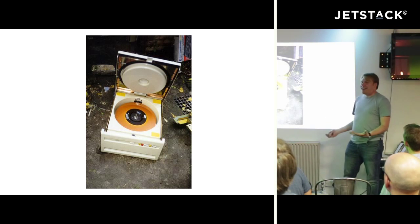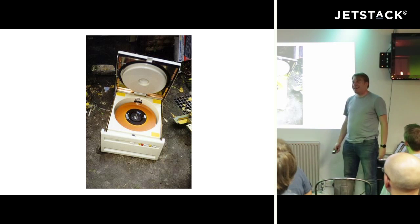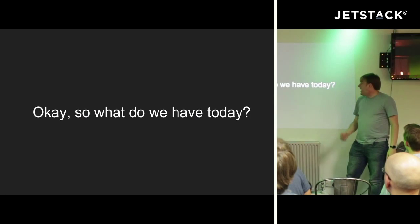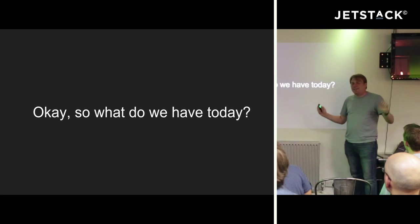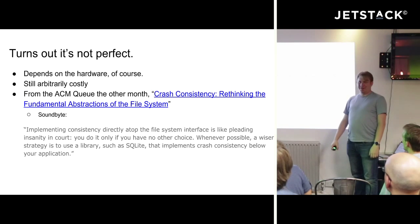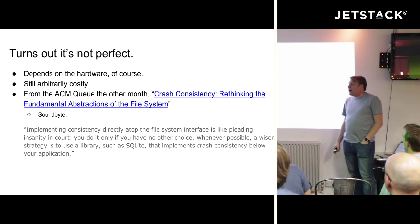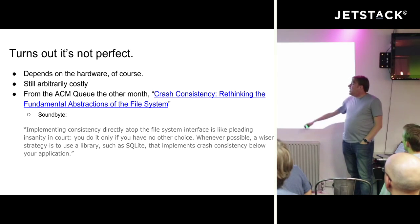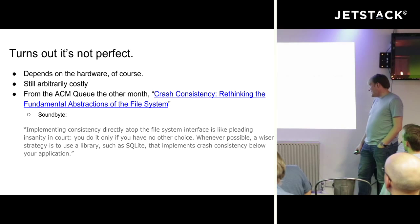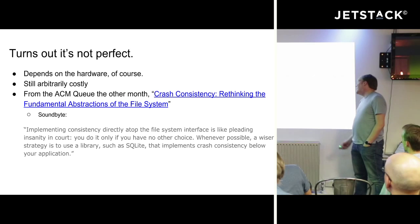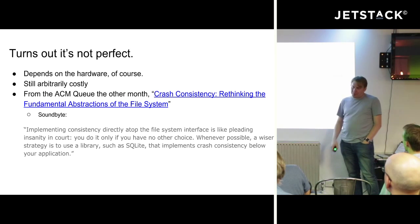So, okay, this is fsync — and wow, that's really kind of scary when you think about it. We're trying to persist our data to disk and who knows. What do we have today? I just switched over to a modern Unix running an ext4 file system. It turns out it's not perfect — it depends on the hardware, same as always. Still arbitrarily costly; it actually could take forever, possibly. And it's in kernel mode and you can't do anything about it. There was a nice write-up in the ACM queue in July, and this quote is perfect: 'Implementing consistency directly atop the file system interface is like swearing in court — you do it only if you have no other choice. Whenever possible, a wiser strategy is to use a library such as SQLite that implements crash consistency below your application.'